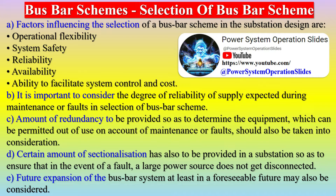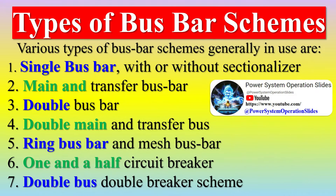Various types of busbar schemes generally in use are: single busbar with or without sectionalizer, main and transfer busbar, double busbar, double main and transfer bus, ring busbar and mesh busbar, one and a half circuit breaker, double bus, and double breaker scheme.